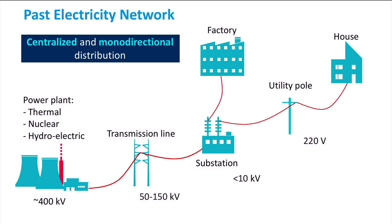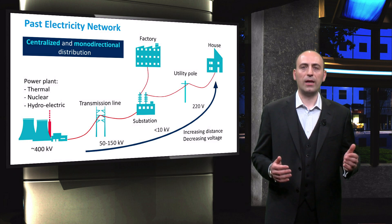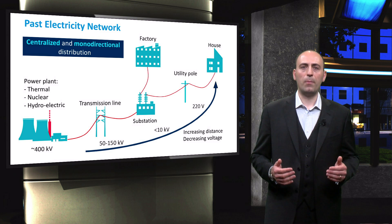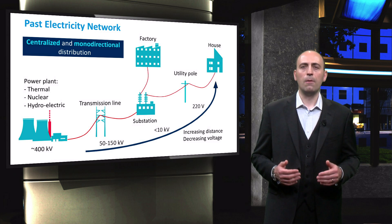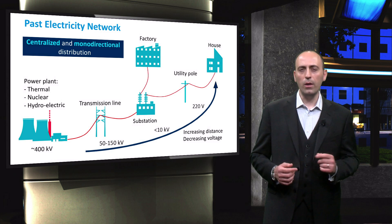To arrive at a house, the power has to be distributed through the city network. This might be achieved by means of utility poles. Now we have electricity at a voltage level of 220 volts in the house sockets. As you may notice, the power flows only from left to right. Furthermore, the voltage gradually decreases as the distance from the production plants increases, because the transmitted power also decreases closer to a specific load. So the configuration of this electricity grid is centralized and monodirectional because the power plants are the roots of this network — only the plants generate power and the power flows exclusively from the plants to the utilities, in only one direction.